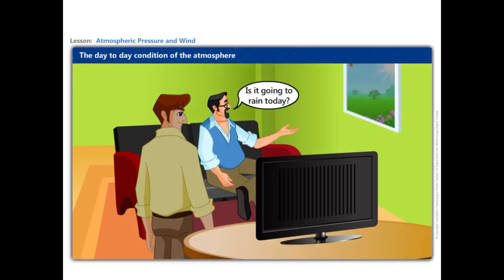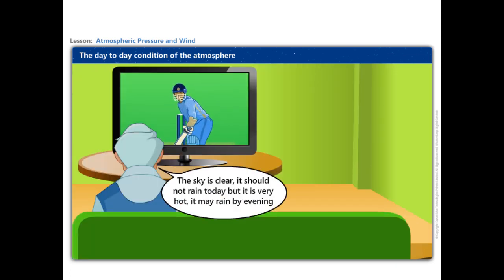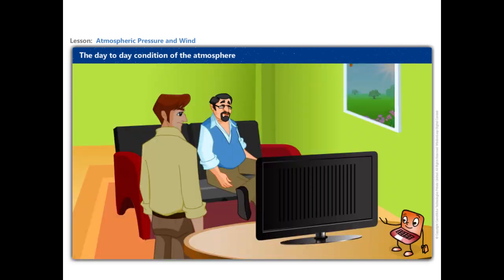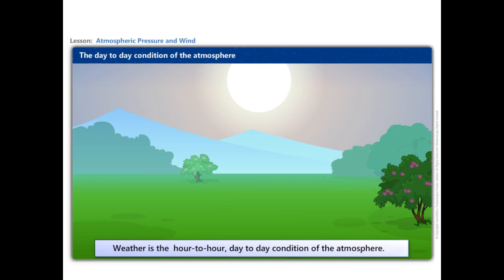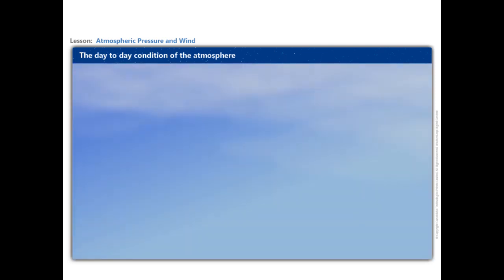Is it going to rain today? No, it will be bright and sunny today. The sky is clear, it should not rain today, but it is very hot — it may rain by evening. They are talking about the hour-to-hour and day-to-day condition of the atmosphere, which can be termed as weather. Weather can change dramatically within a few hours.